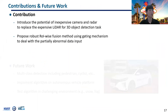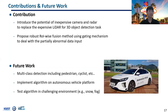In summary, our contributions are as follows. First, we introduce the potential of inexpensive camera and radar to replace the expensive LiDAR sensor. Second, we propose a robust ROI fusion method using a gating mechanism to handle partially abnormal input data. For future work, a multi-class detection head is required to detect various types of moving objects. Moreover, we plan to implement the proposed method on our vehicle platform and test algorithms in challenging environments.